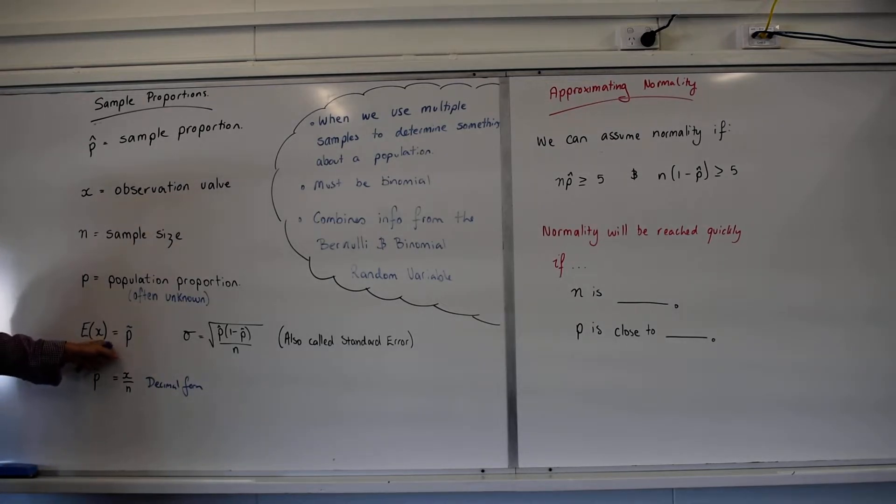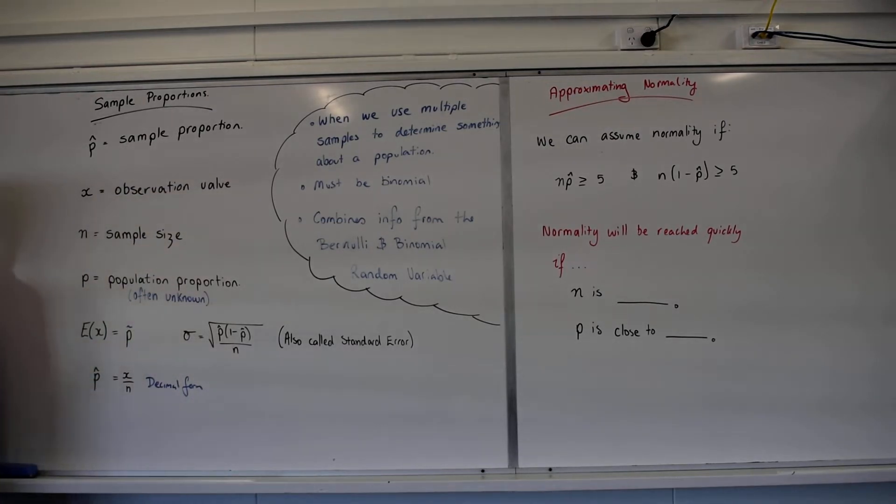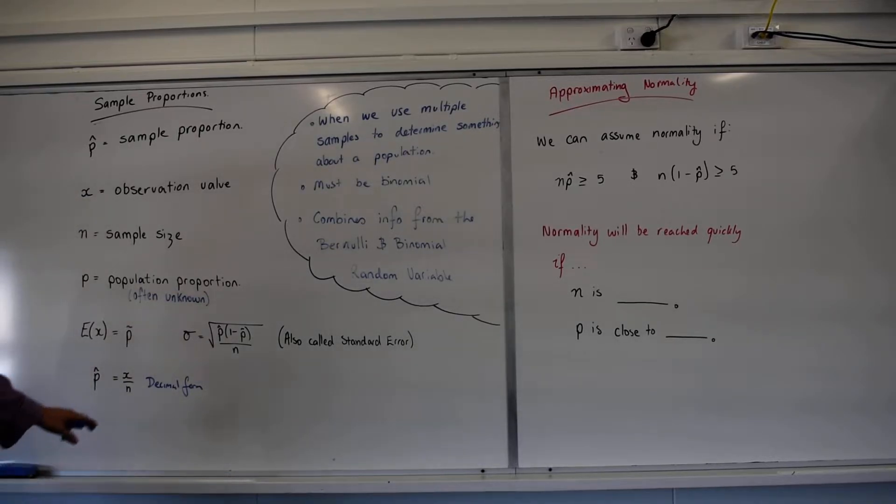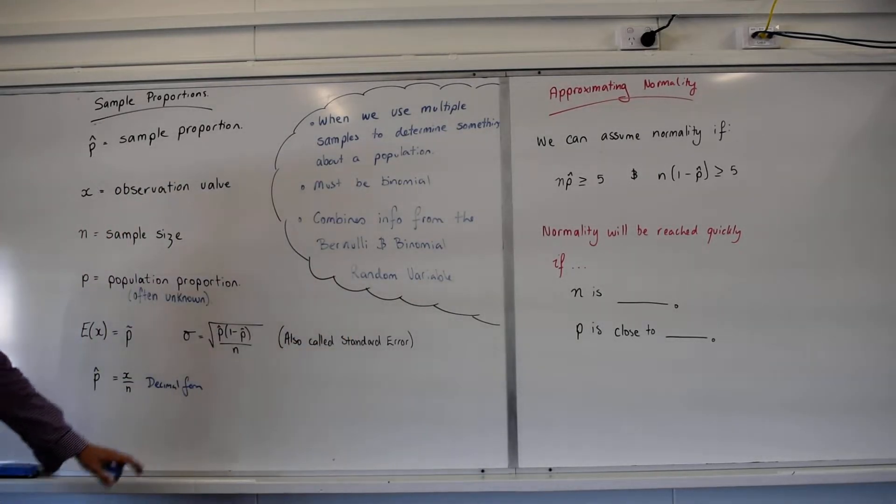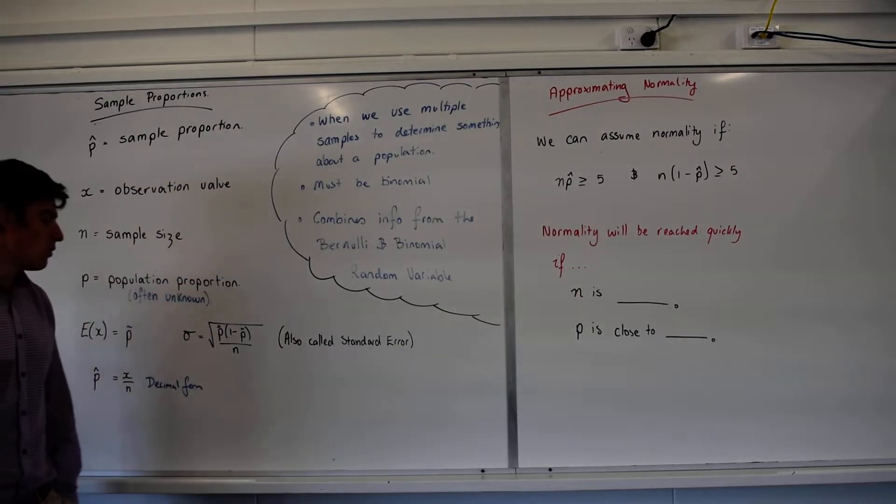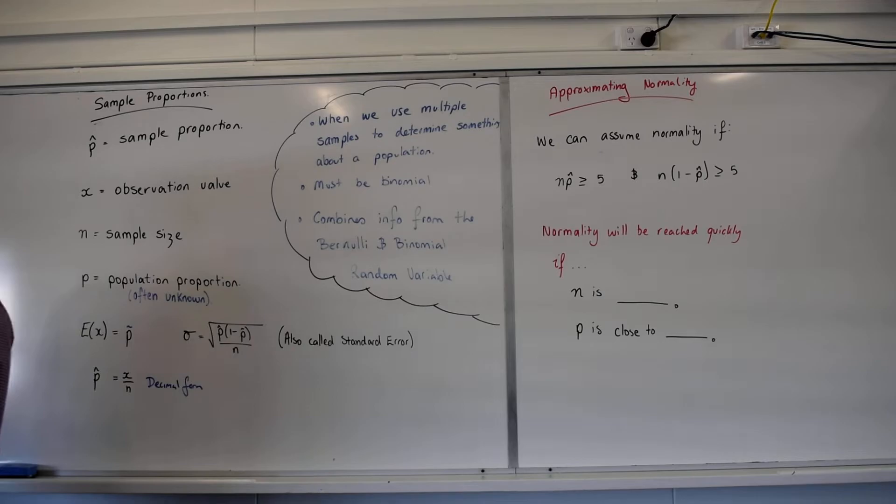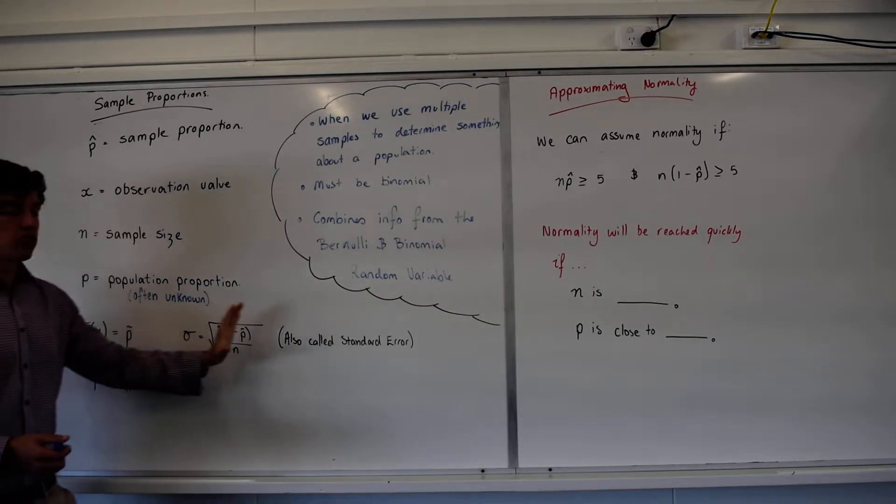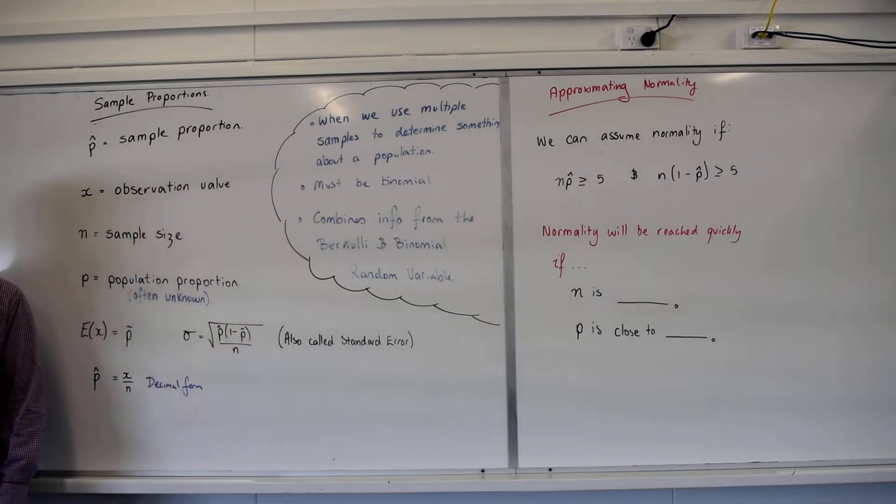Our expected value is just simply our sample proportion, so that's the proportion of people we're expecting to see support Queensland. And our standard deviation, very similar to our binomial random standard deviation, there's a slight difference, but it's a combination of the two: P hat, 1 minus P hat, divided by n, and the square root of all that. Just be aware the square root applies to the whole thing.